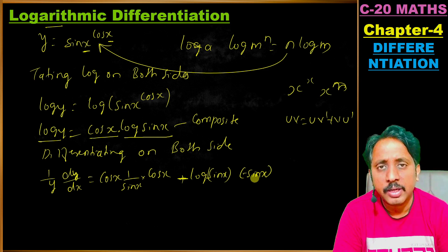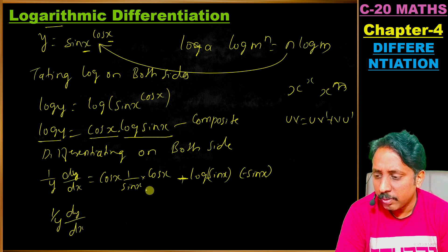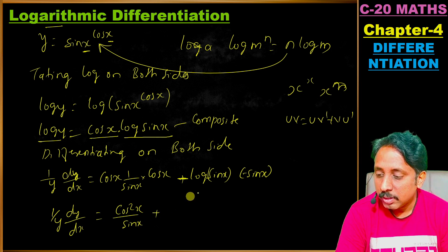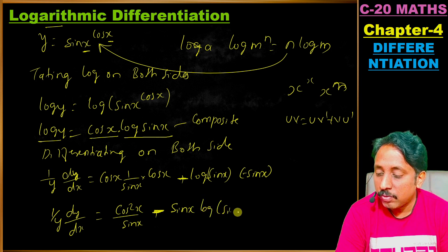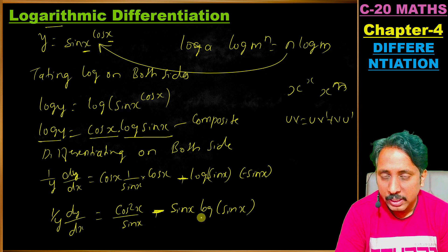Simplifying, we get 1 by y times dy by dx equals cos squared x divided by sin x minus sin x times log of sin x.